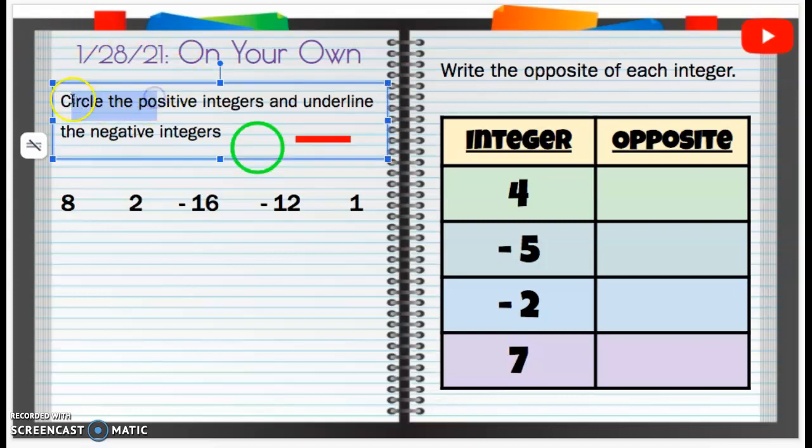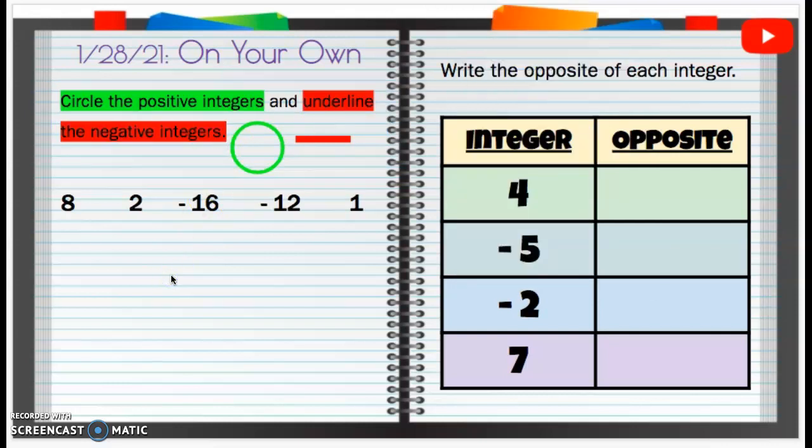So we're going to circle the positive integers. Remember, positive integers is, I like to think of green, so we're going to circle the positive integers above 0. And we're going to underline the negative integers. Negative is going to be below 0.